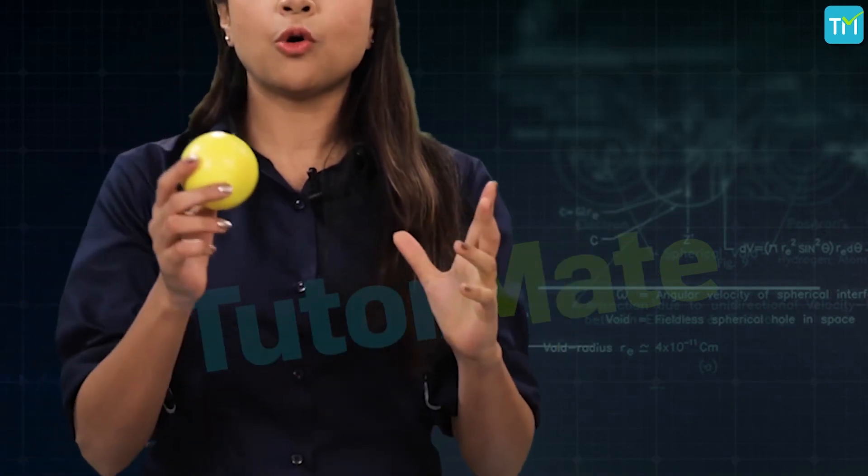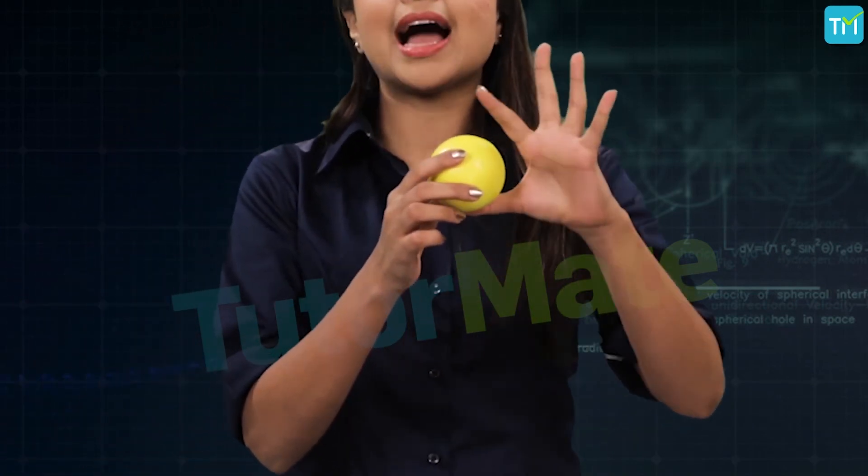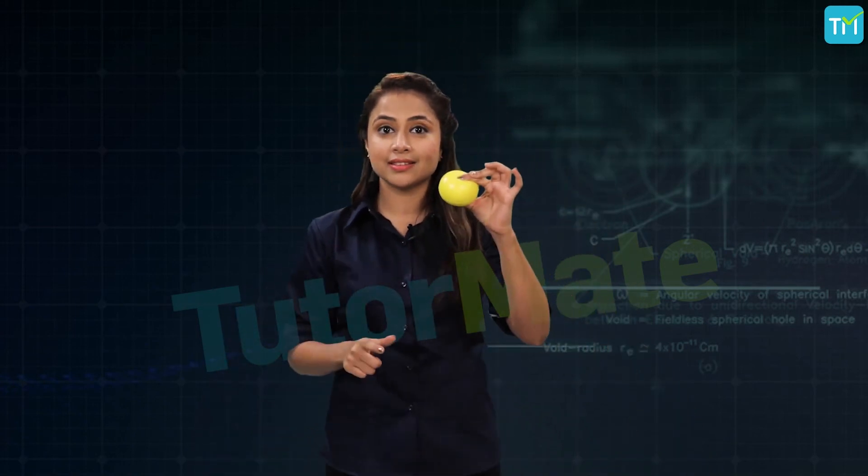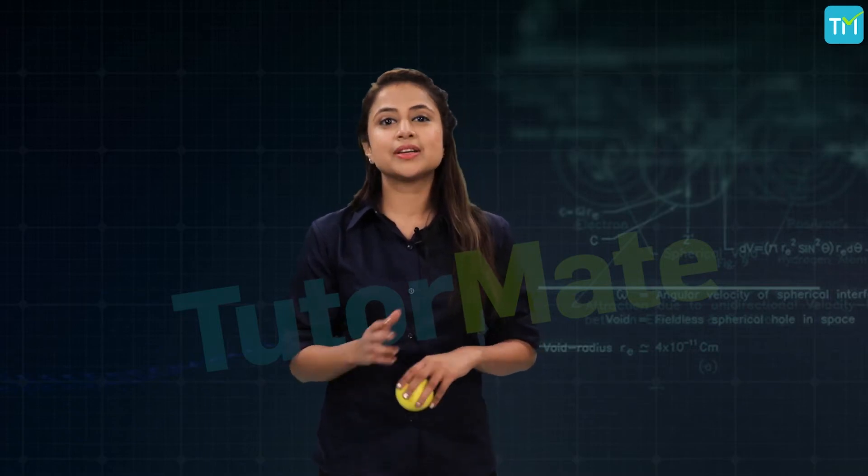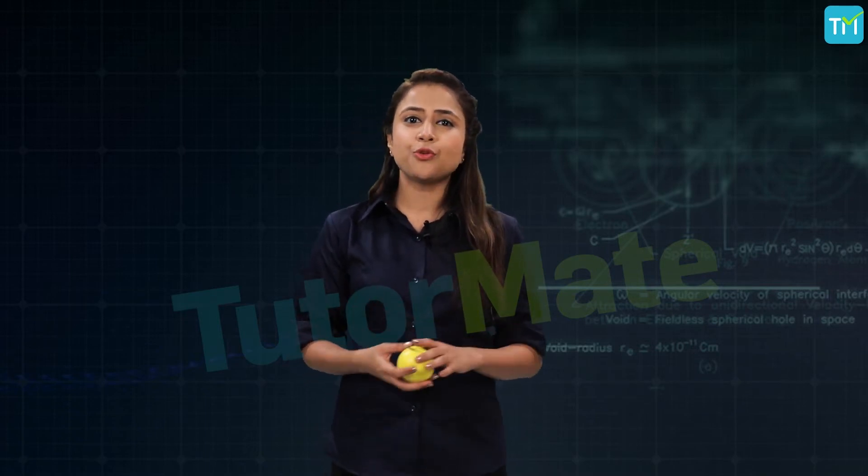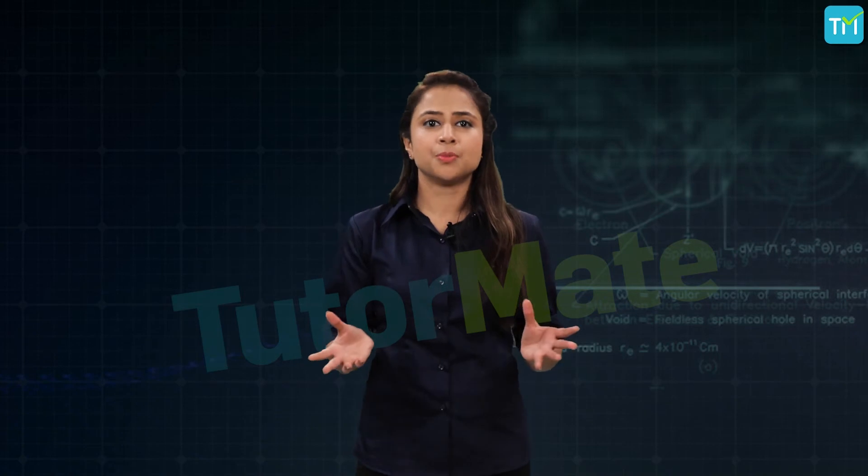If I hold it between my thumb and my forefinger like this and press it, it will squeeze in the middle and expand at the sides. Because in this case, even though the force applied by my thumb and my forefinger are balanced, the shape of the ball is changing. So we can conclude that balanced forces can change the shape of the body.